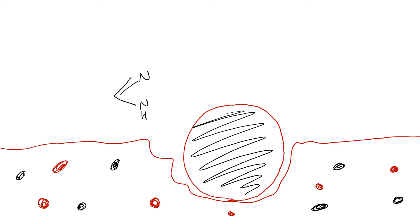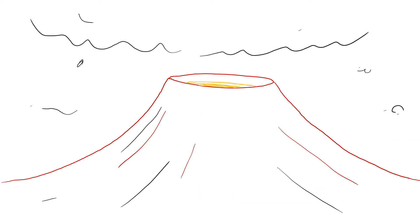It smashed into the surface, spreading these organic molecules across the planet's surface and oceans. Some scientists theorize that these molecules might have found their way into a volcanic landscape.